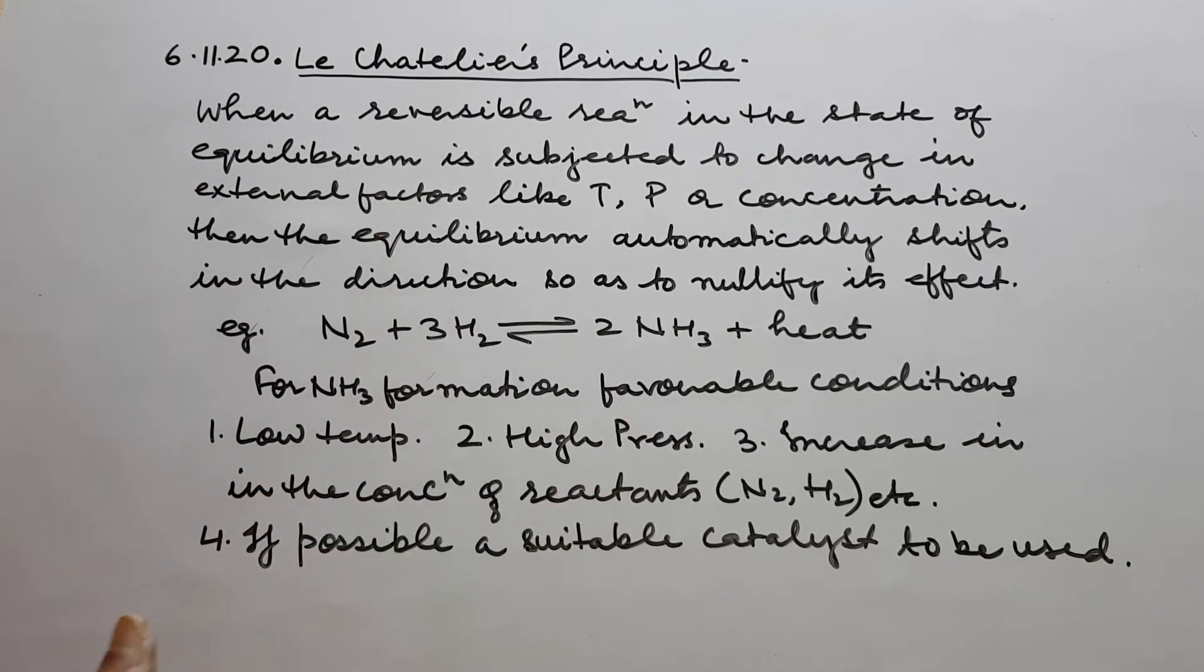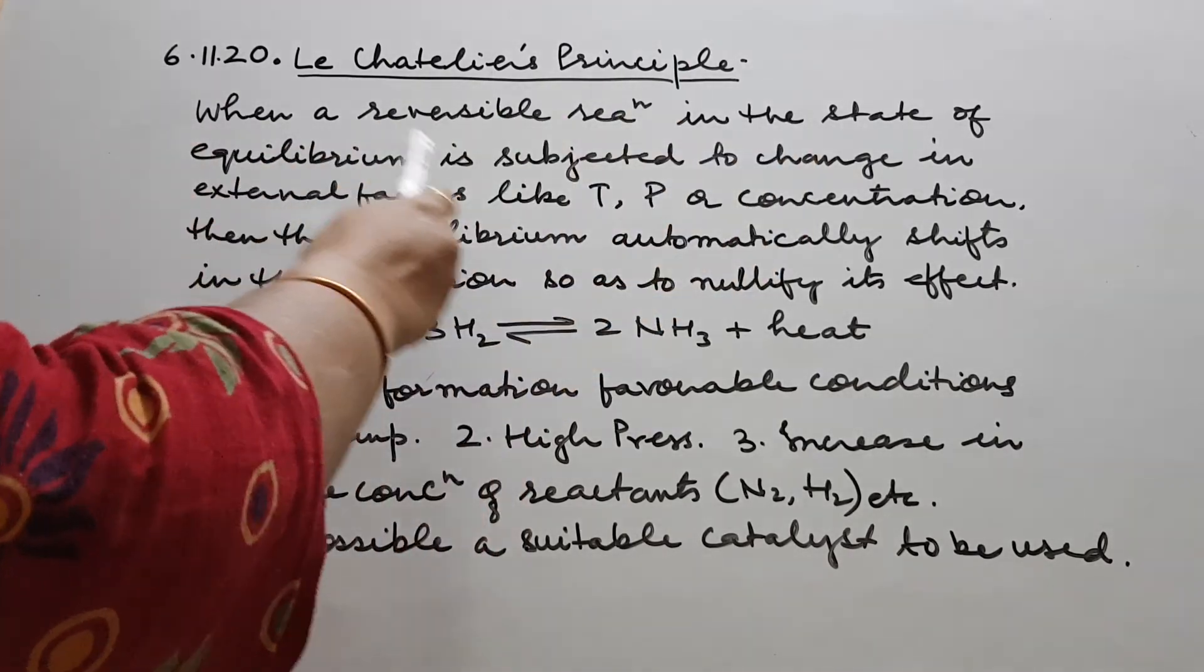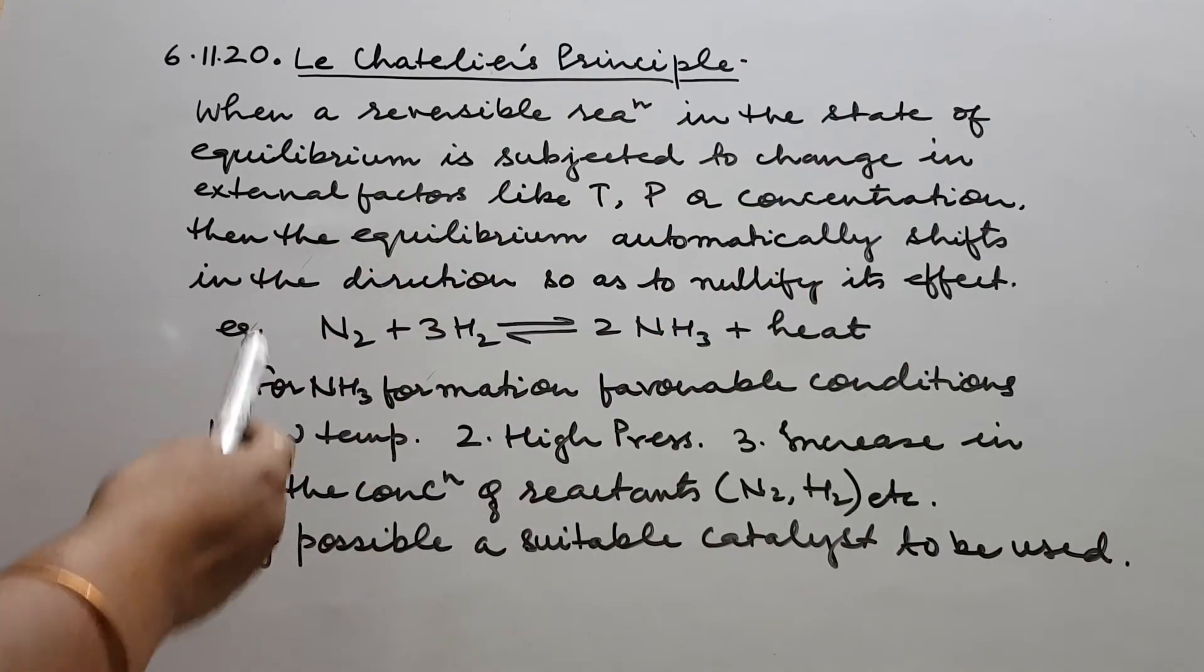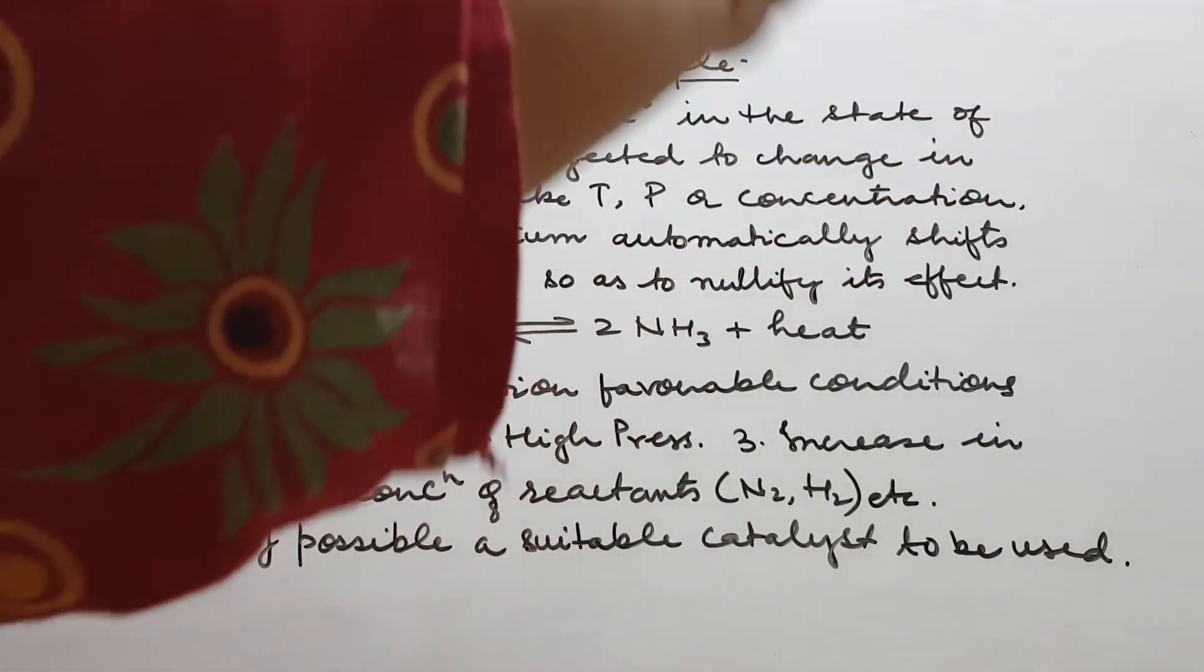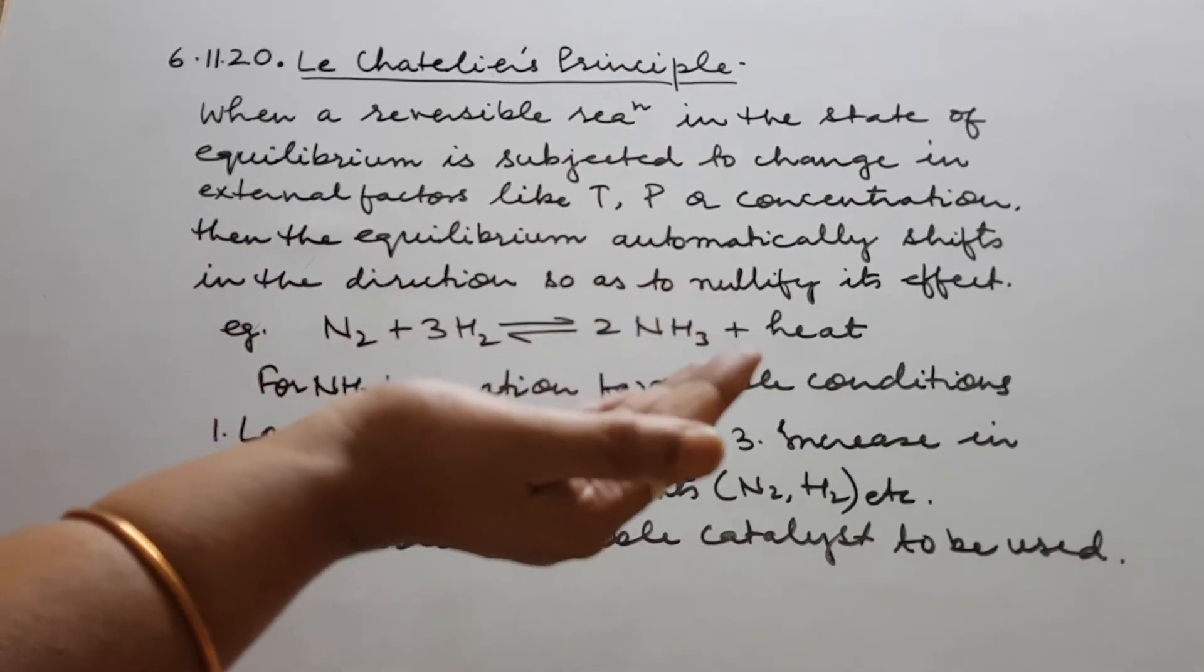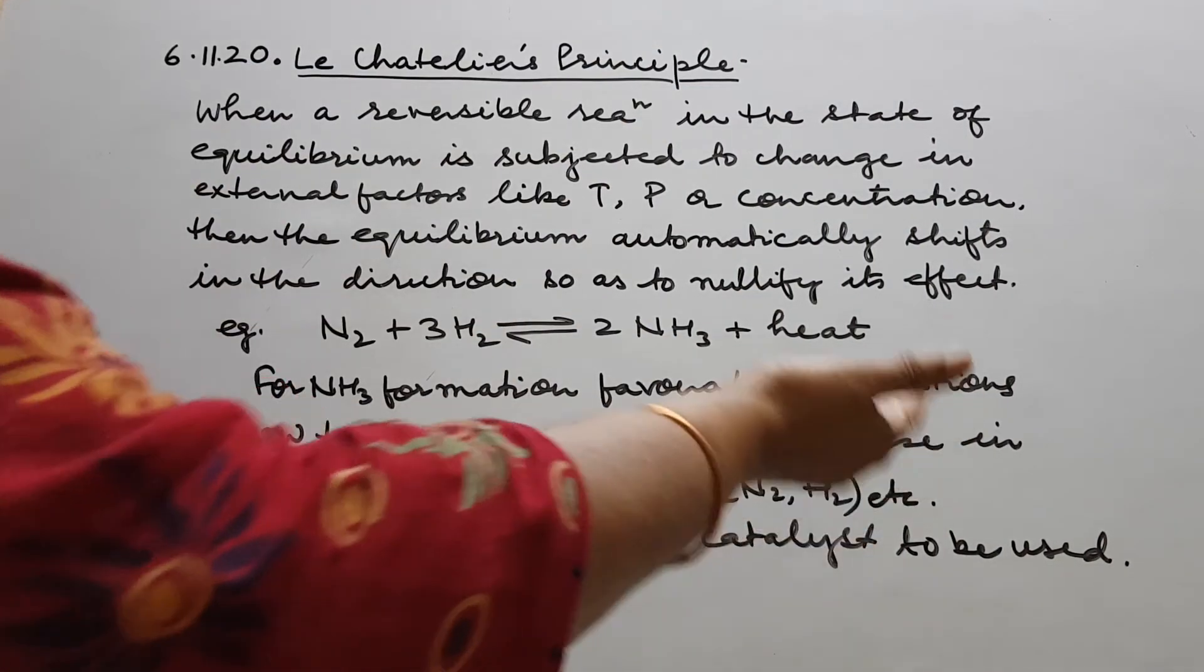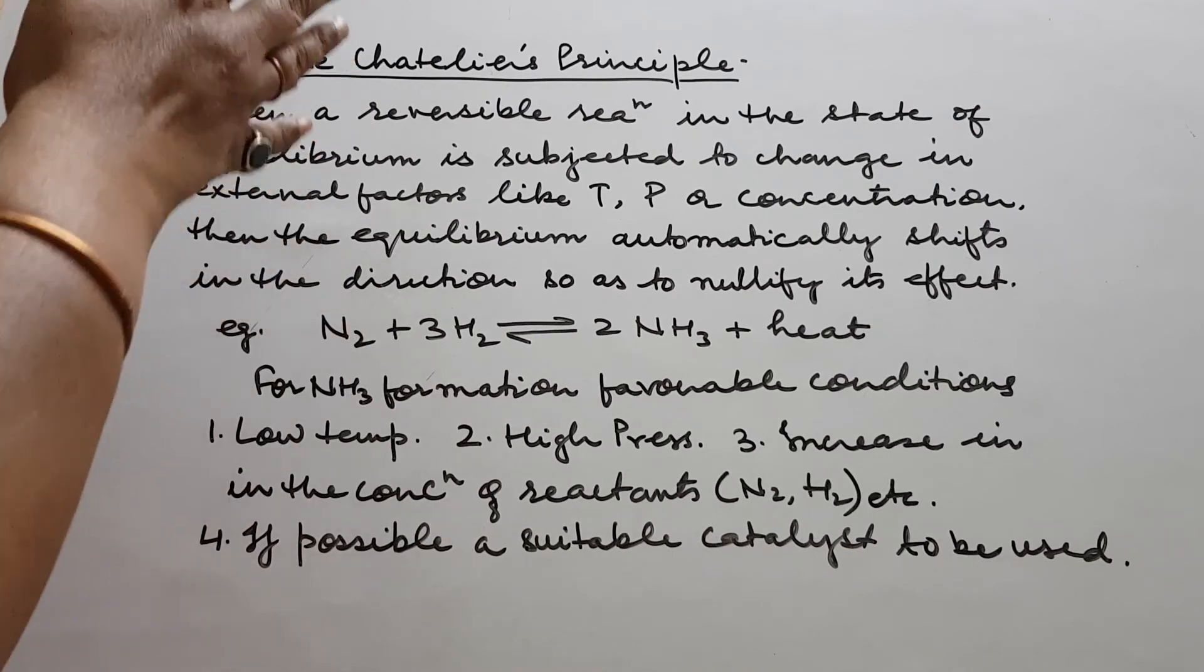So reaction automatically shifts in the direction so as to nullify its effect. When the reversible reaction in the state of equilibrium is subjected to change in external factors like temperature, pressure or concentration, then the equilibrium automatically shifts in the direction so as to nullify its effect. So exothermic, if it is giving out heat, low temperature. If it is proceeding with the decrease in number of moles of the products or say volume, then always increase in pressure and increase in the concentration of reactants and if possible, a suitable catalyst.